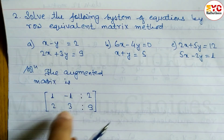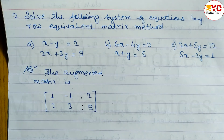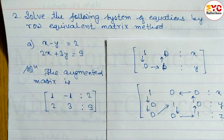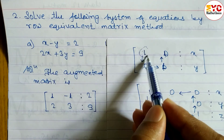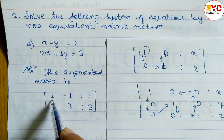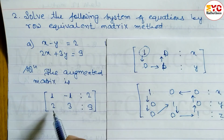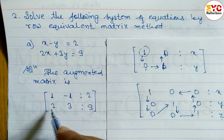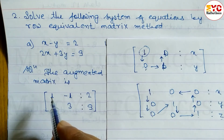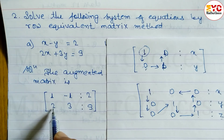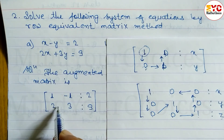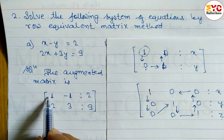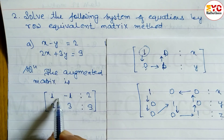Now we have to make the identity matrix 1, 0, 0, 1. The first row already has 1, so we need to make the element below it 0. To make that 0, we use: directly minus 2 times row 1.